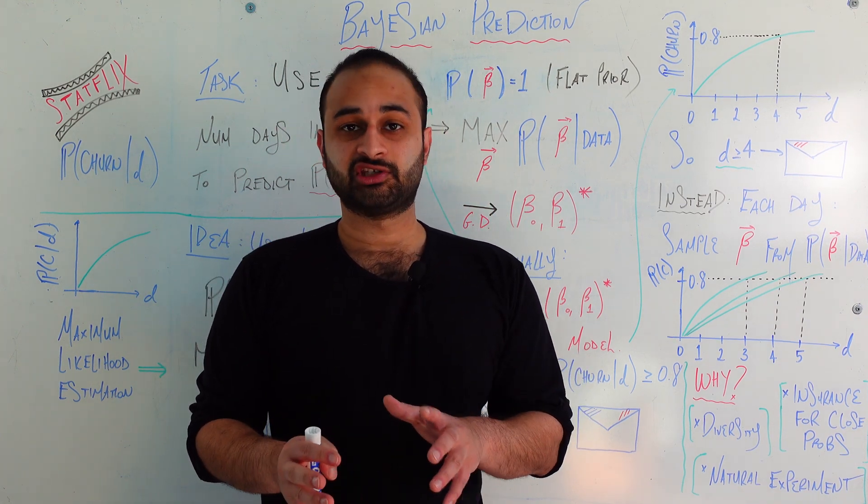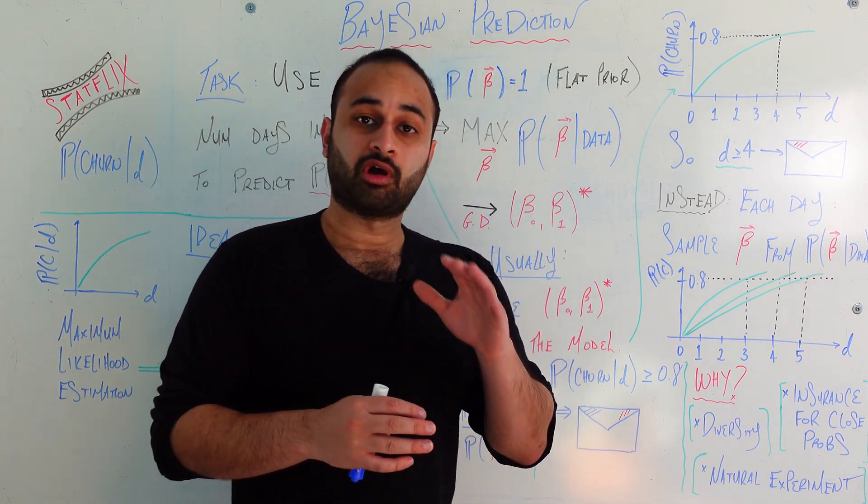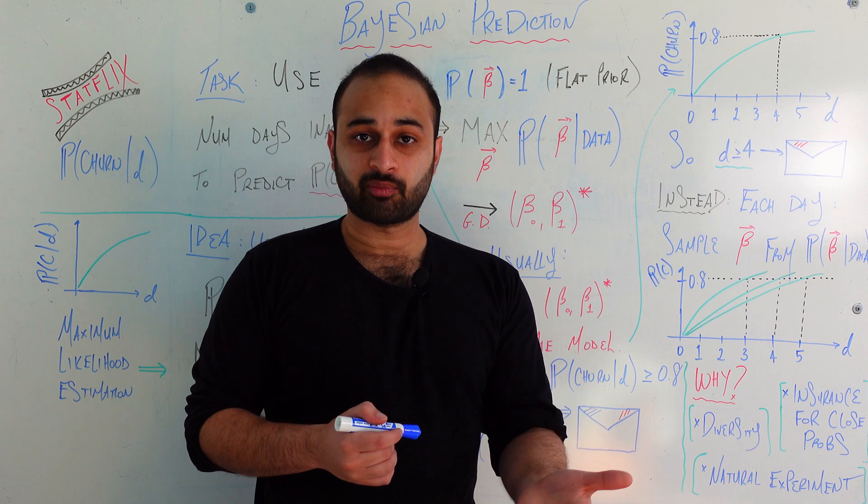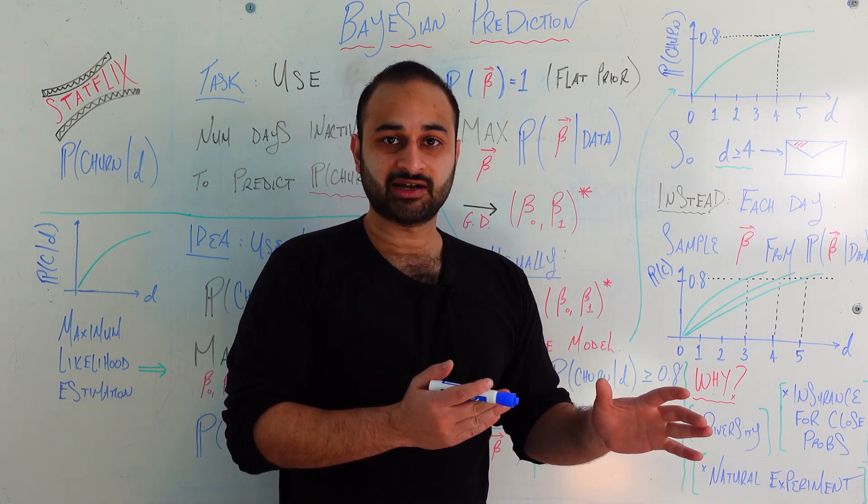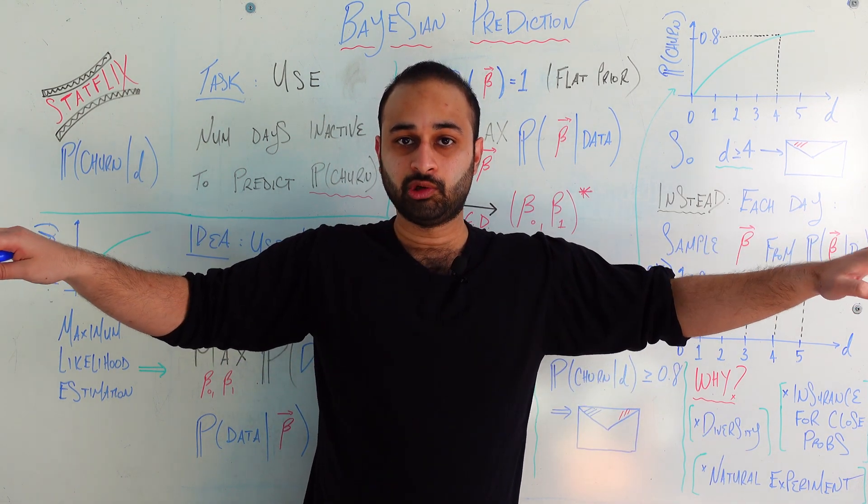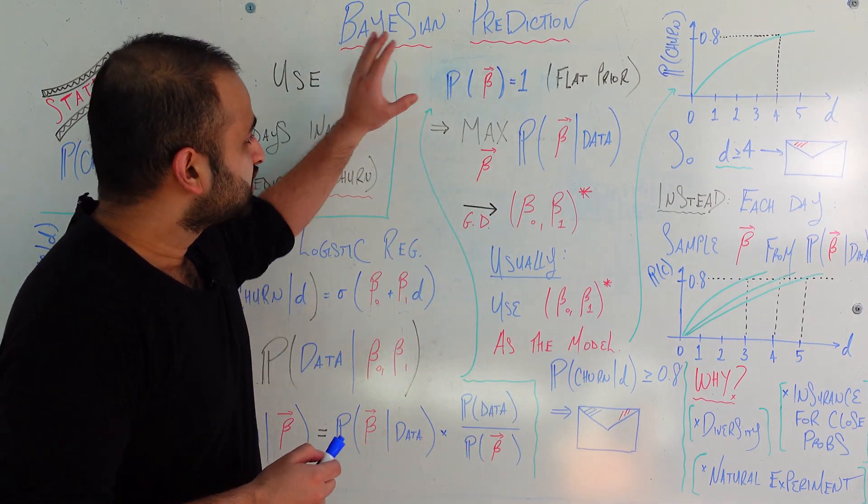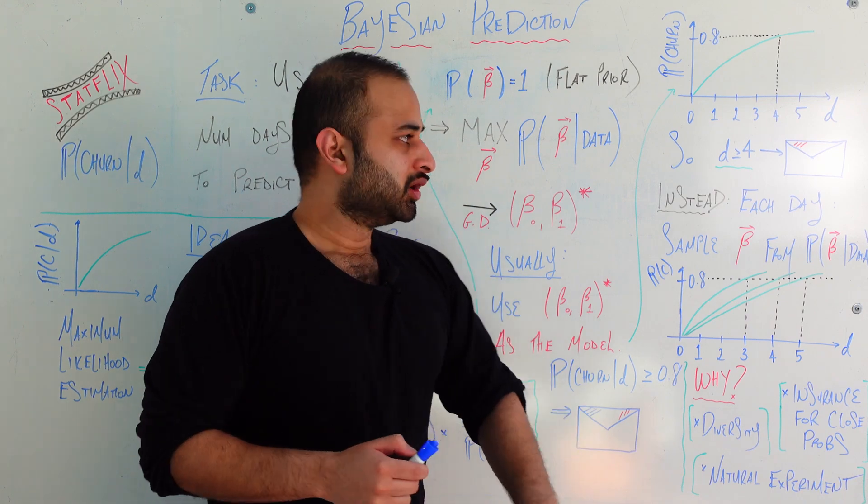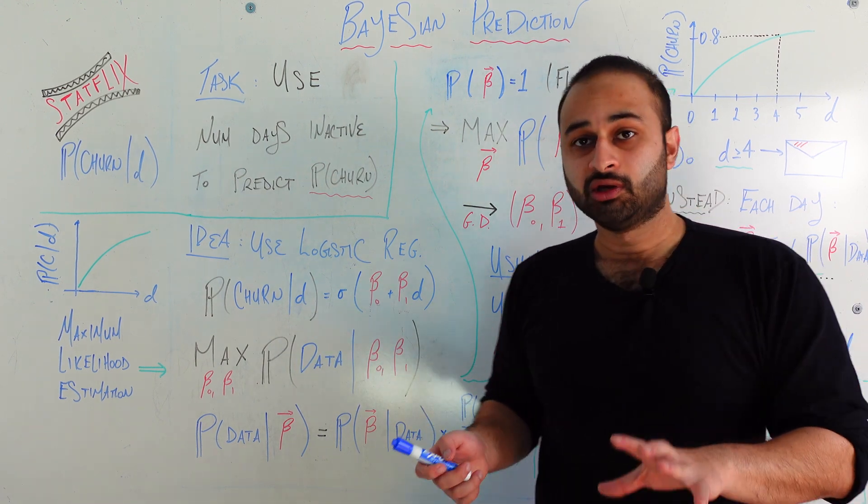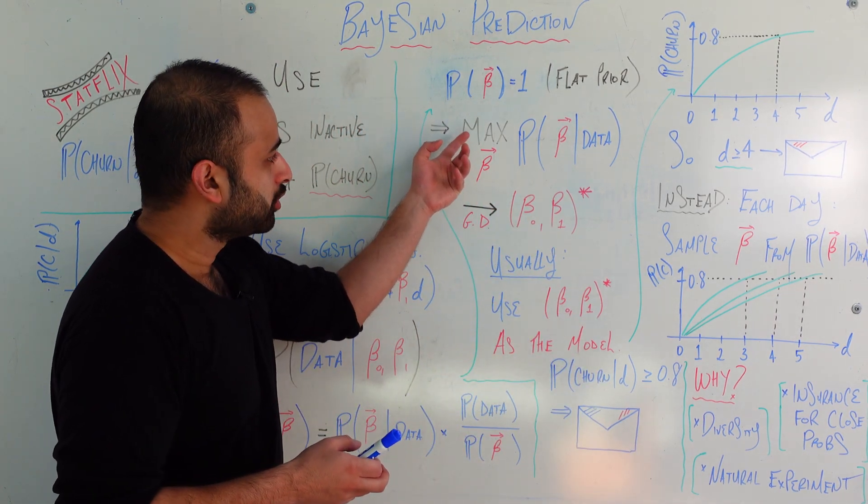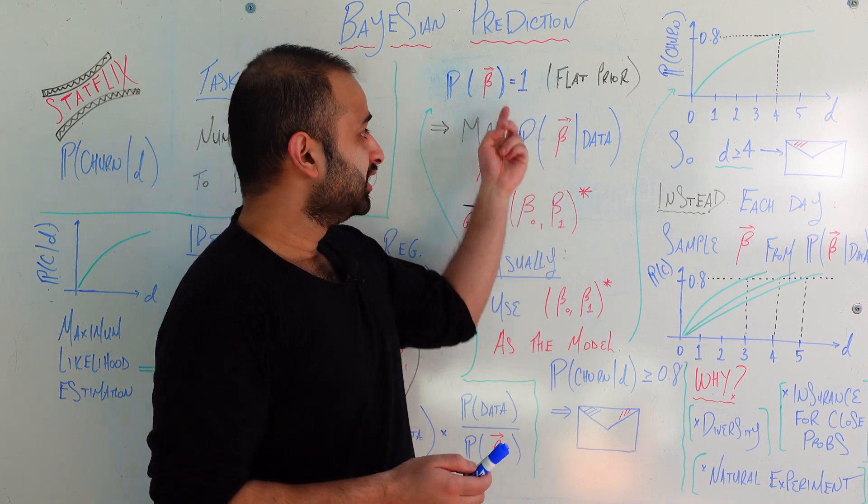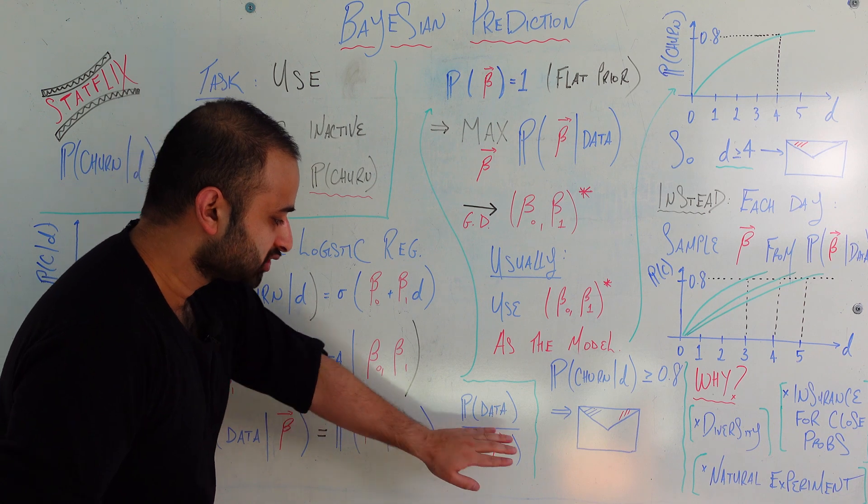So first things first, we're going to make the assumption, and I want to be very clear here this is just an assumption to simplify things for this video, that the probability of observing any beta is equal to one. In a more intuitive sense, this is what we call setting a flat prior or an uninformative prior, where in the context of Bayesian stats, I don't have any preference, any prior preference for one beta versus a different setting of betas.